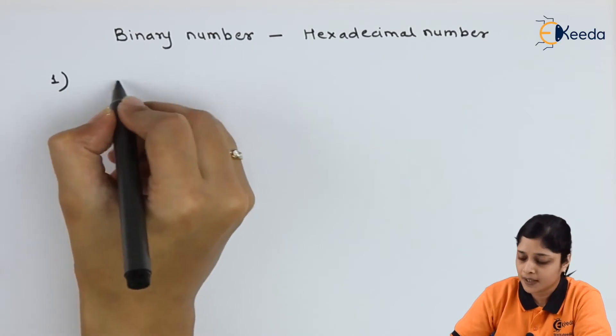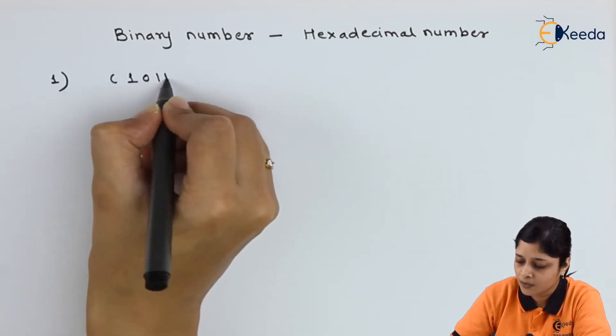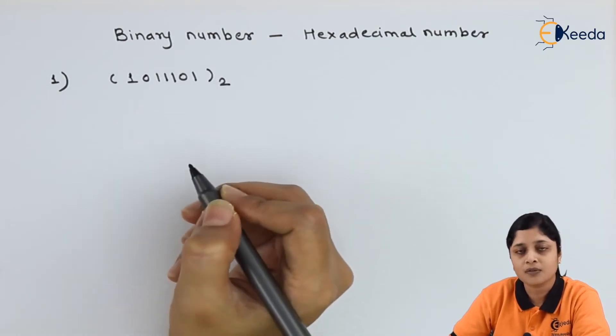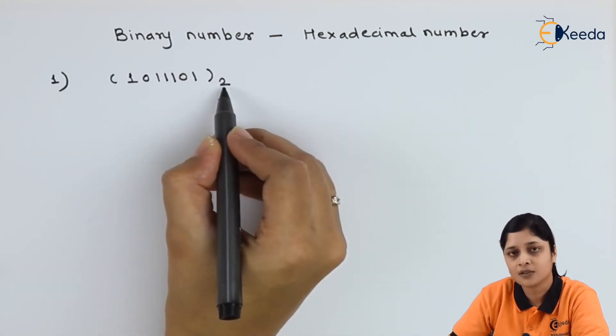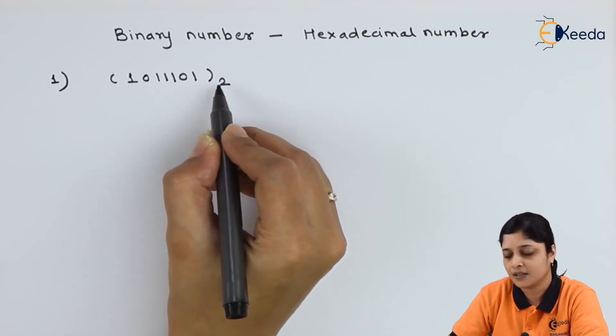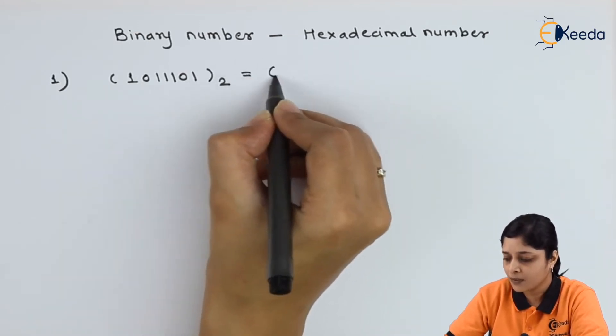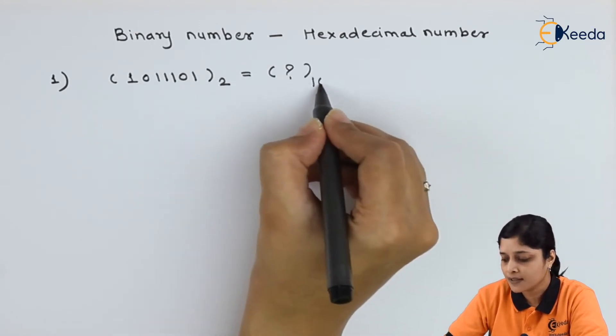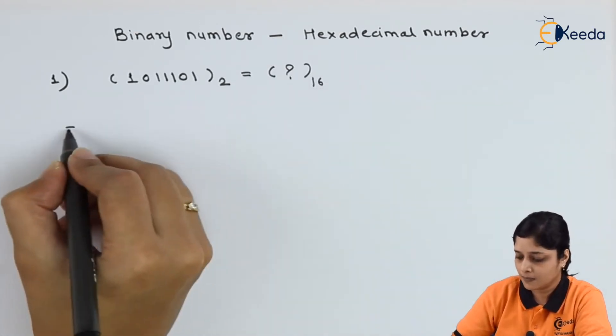Binary number to hexadecimal number. First example is 1011101 to the base 2. Always write down base 2. Base denotes the number system. Here base 2 means it is called the binary number system. You have to convert it into hexadecimal. Hexadecimal base is 16. How to solve?